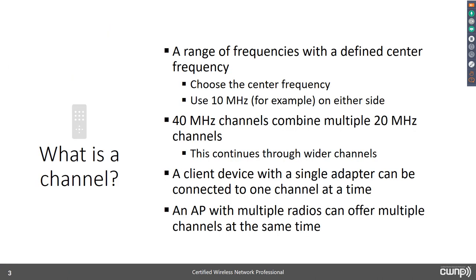What is a channel? An 802.11 channel is a range of frequencies with a defined center frequency — basically a block of radio frequency. We choose a center frequency and use space on either side. For a 20 MHz channel we use 10 MHz on either side; for the older 22 MHz channel used in original 802.11 or 802.11b, it uses 11 MHz on either side.